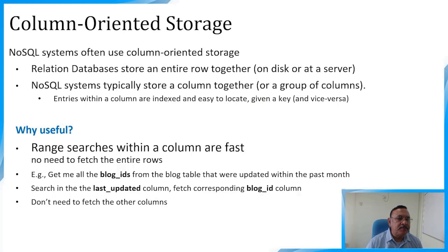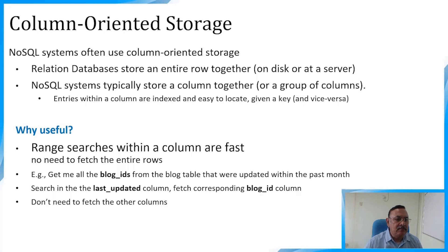NoSQL systems often use column-oriented storage. Relational databases store an entire row together on disk; NoSQL systems typically store a column or group of columns together. Entries within a column are indexed and easy to locate given a key. Range searches within a column are fast — no need to fetch the entire row. For example: to get all blog IDs updated within the past month, search only the last_updated column, then fetch the blog ID column — no need to fetch other columns.